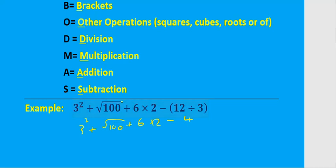Now that the brackets are gone, we go to other operations such as squares, cubes, and roots. There's a square, so that's up next. 3 squared is 9, and the square root of 100 is 10.